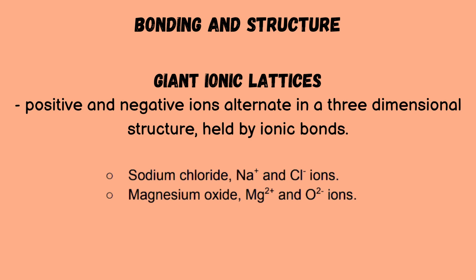Bonding and structure is the next subtopic. The first is giant ionic lattices, where positive and negative ions alternate in a three-dimensional structure held by ionic bonds. For example, sodium chloride has Na⁺ and Cl⁻ ions, while magnesium oxide has Mg²⁺ and O²⁻ ions.